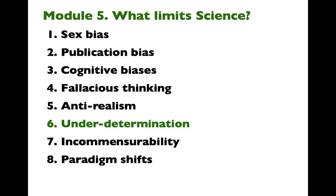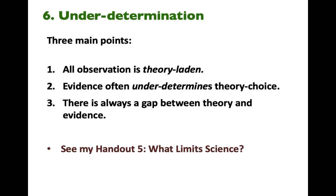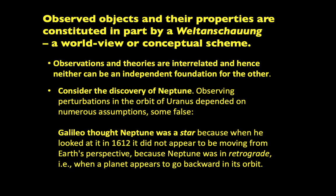Let's talk more about under-determination — this is new in this lecture. There are three main points: all observation is theory-laden; evidence often under-determines theory choice, as there is too often insufficient evidence to determine whether one theory is better or more acceptable than another; and there is always a gap between theory and evidence. Observed objects and their properties are constituted in part by a Weltanschauung — a worldview or conceptual scheme. Observations and theories are interrelated, and so neither can be an independent foundation for the other.